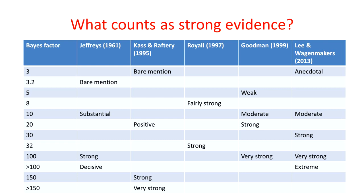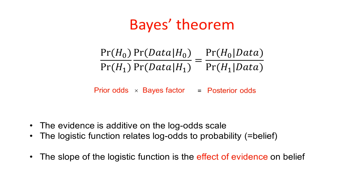Let's look at Bayes' theorem again, how the prior odds are multiplied by the Bayes factor to get the posterior odds. If we take logs, then the evidence in the Bayes factor is additive on the log odds scale.